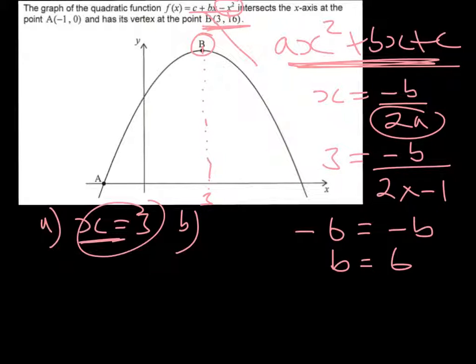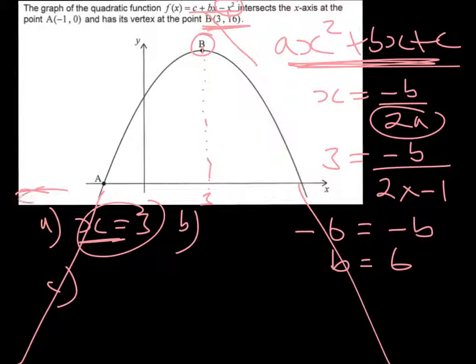Part c then asks us to write down the range of f(x). Remember domain and range: domain is essentially the input values and range is the output values. If we have a look at this function here, we should recognize that this continues forever, down here to negative infinity and up here to positive infinity.